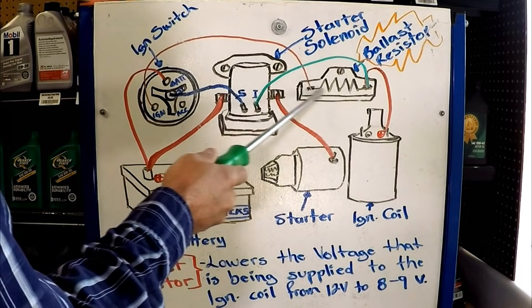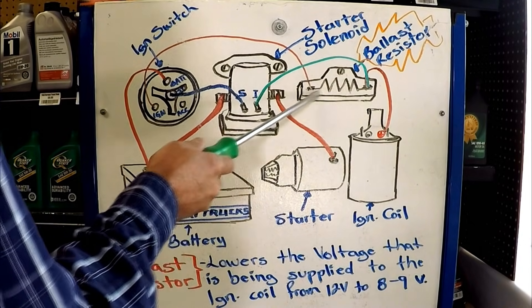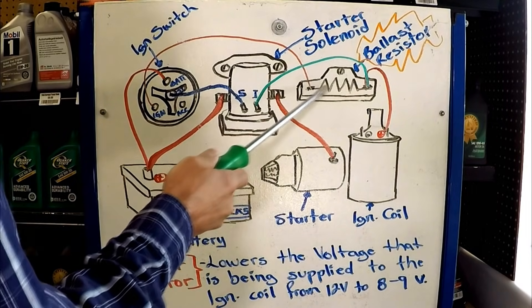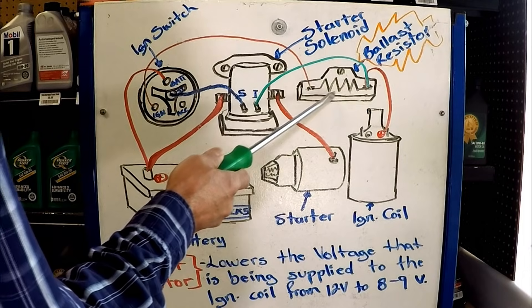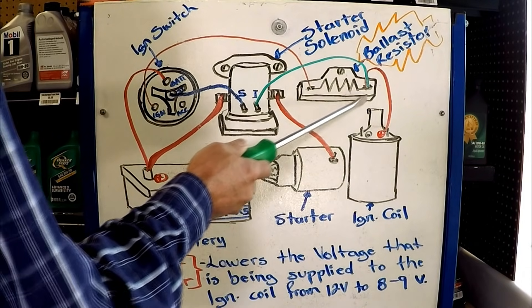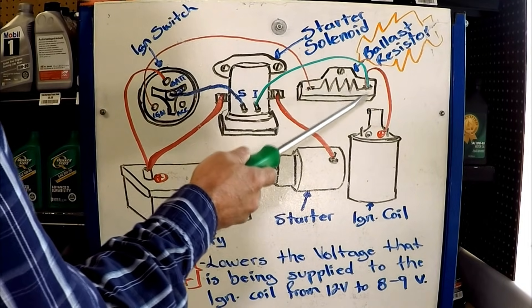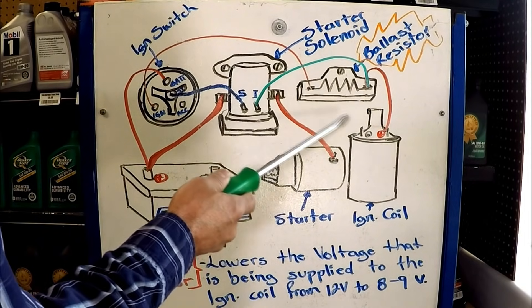You can also unplug the wires and test the resistance of the ballast resistor itself. The average resistance readings on the ballast resistor is going to be between 1.2 and 3 ohms. Normally, the heavy-duty ballast resistors are going to have about 1.4 ohms resistance, just so you know.